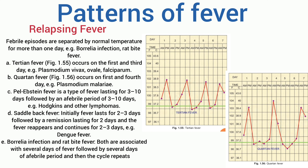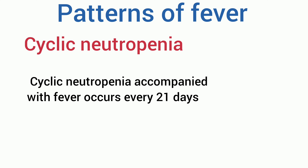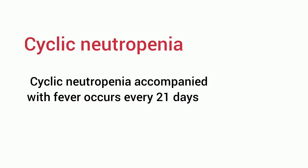Saddle-back fever: initially fever lasts for 2–3 days, followed by a remission lasting for 2 days, and then the fever reappears and continues for 2–3 days, for example Dengue fever. Borrelia infection and relapsing fever are both associated with several days of fever followed by several days of an afebrile period, then the cycle repeats, for example cyclic neutropenia accompanied with fever occurring every 21 days.